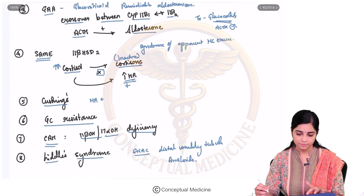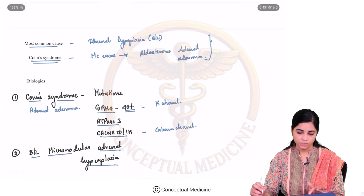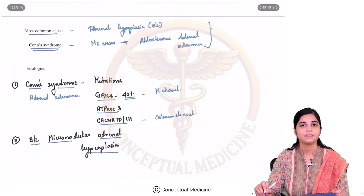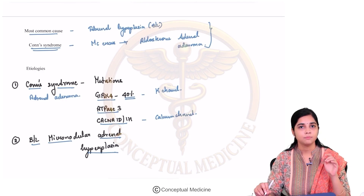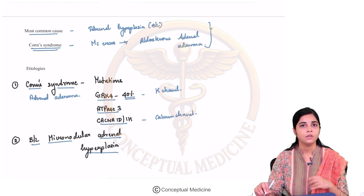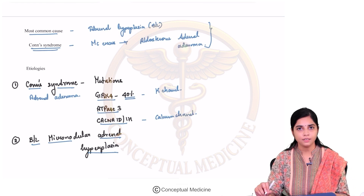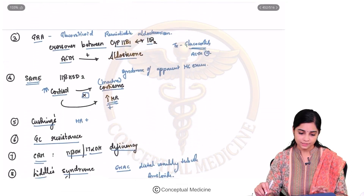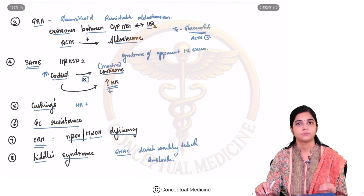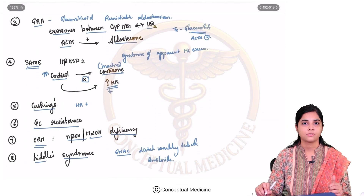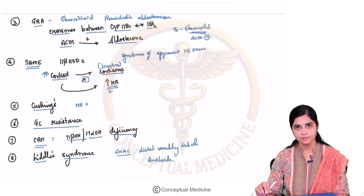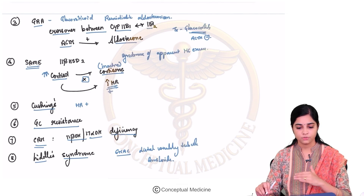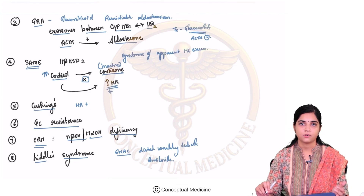So to put things in perspective — the majority of cases of mineralocorticoid excess are due to Conn's syndrome, either an adenoma producing aldosterone or bilateral adrenal hyperplasia. The rarer causes are GRA, syndrome of apparent mineralocorticoid excess, glucocorticoid resistance, and Liddle syndrome.